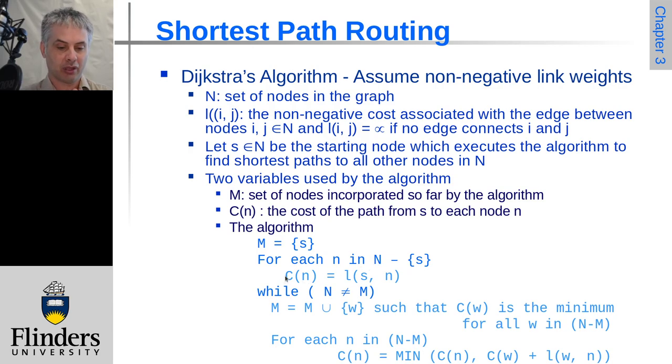Then for each node in the complete set of nodes except for itself, this is what this N minus s means, so every node other than itself, we say that the cost to get to that node is equal to l(s,n). So we're saying the cost from ourselves to get to that node is what we're going to say the cost to that node is. So this is saying initially the cost to every node is the cost that we already know to get to that node. So lots of these will be infinity to begin with, unless the node that is doing it happens to be directly connected to every other node.